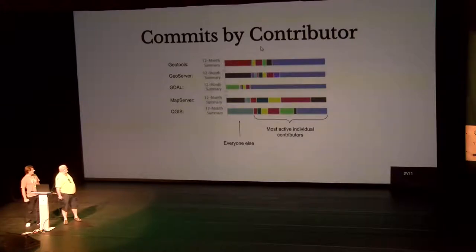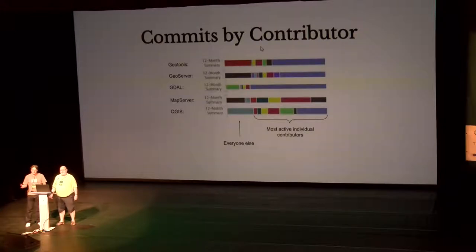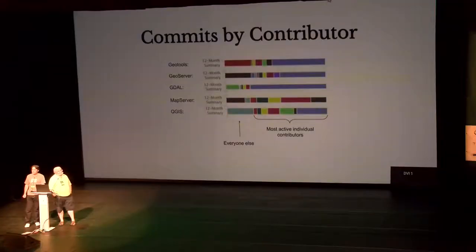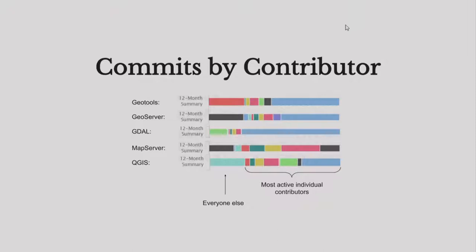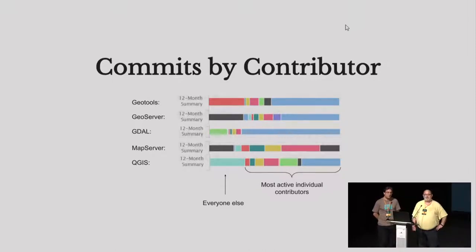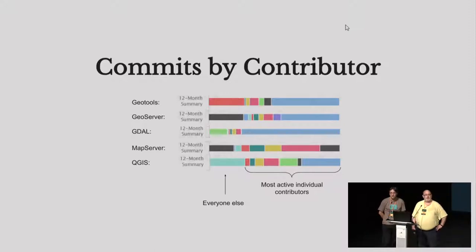In those projects — GeoTools, GeoServer, GDAL, MapServer, QGIS — just to get a representative set — you can see that in every project, there is one developer, or two developers, or five developers tops that do 50–70% of the work by themselves. And everybody else — and those everybody else might be 100 other people over a year, this is a one-year statistic — commit very few changes. Very small bus factor. We have very few people keeping the project alive and going, and it's the same for most of our OSGEO open source projects.